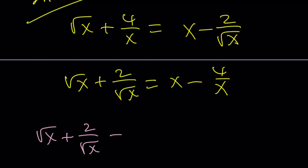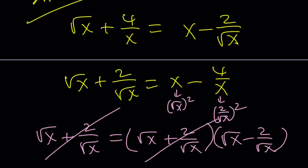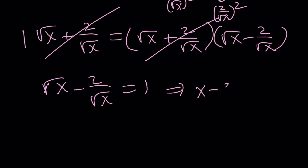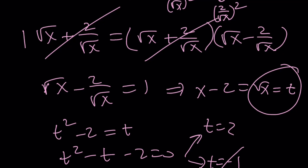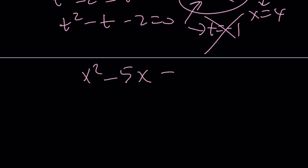We can think of this as square root of x squared minus 2 over square root of x squared, and those terms appear on the left-hand side. So we factor as square root of x plus 2 over square root of x times square root of x minus 2 over square root of x using difference of two squares. These two cancel out leaving 1, so square root of x minus 2 over square root of x equals 1, giving us x minus 2 equals square root of x. Substituting T equals square root of x: T squared minus T minus 2 equals 0, so T equals 2 or T equals negative 1. Since T is positive, T equals 2, meaning x equals 4 and x squared minus 5x equals negative 4.